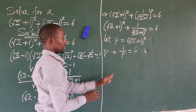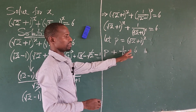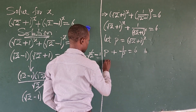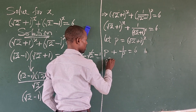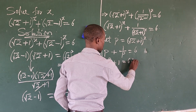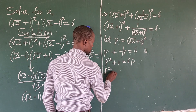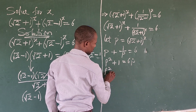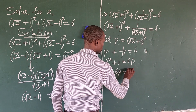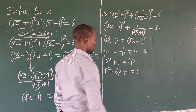This now gives us p + 1/p = 6. We eliminate the fraction by multiplying through by p, giving us p² + 1 = 6p. Rearranging, we have p² - 6p + 1 = 0.